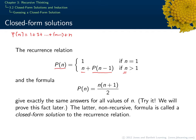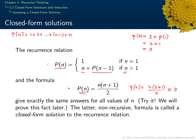If you compare the values of p of n from the recurrence relation to the values from the direct formula, you'll see they appear to be the same. For example, p of 2 according to the recurrence relation is 2 plus p of 1. But p of 1 is 1, so that's 2 plus 1, which is 3. Using the direct formula, 2 times (2 plus 1) over 2 is also equal to 3. This second formula — the direct formula — is what we call a closed-form solution to the recurrence relation.